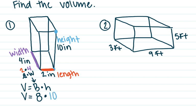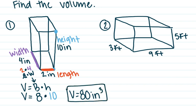Then we multiply big B times height: 8 times 10 equals 80. The volume of this shape is 80 cubic inches. Our units change because with area they were to the second power, but now we're multiplying inch times inch times inch — three of them — so our units are to the third power. Volume is 80 inches to the third power.